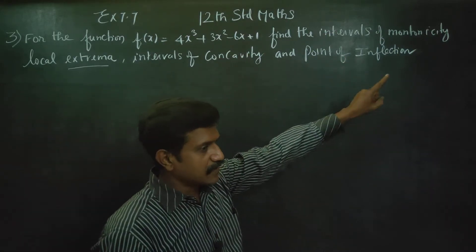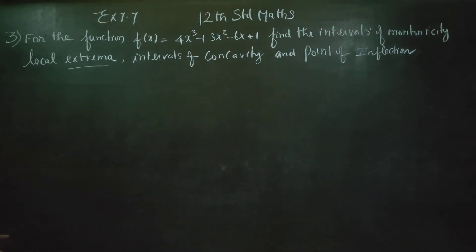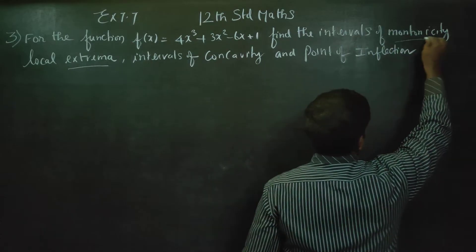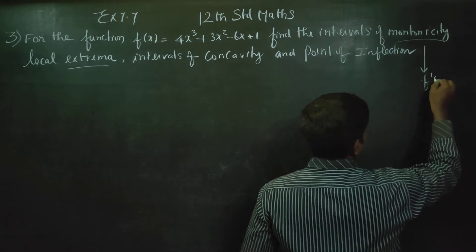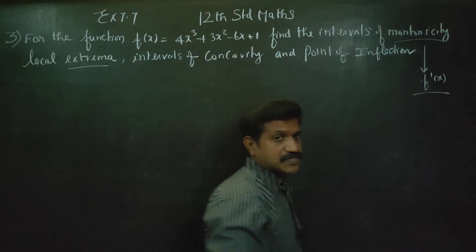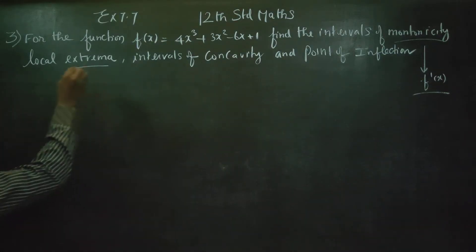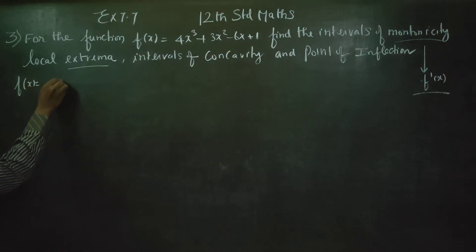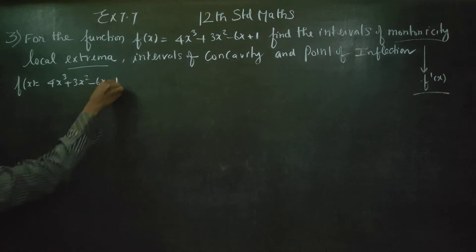For monotonicity, we determine whether the function is increasing or decreasing. The rule for monotonicity is first differentiation. So first I will start with f(x) = 4x³ + 3x² - 6x + 1.